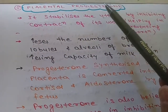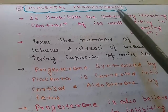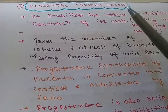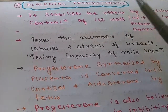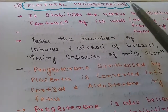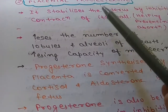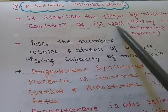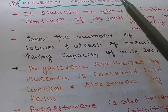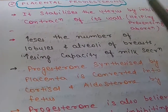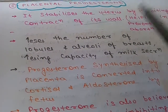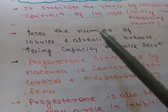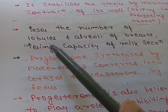The first function is that it stabilizes the uterus. Progesterone is a pregnancy hormone, so it promotes all activities that help in maintaining the fetus within the mother for nine months. It stabilizes the uterus by inhibiting contraction of its wall, so that the fetus will not be expelled out of the uterine cavity — thus helping in preventing abortion.